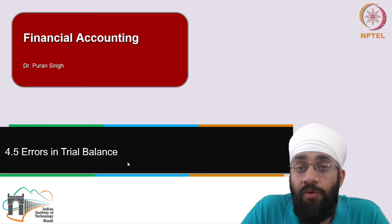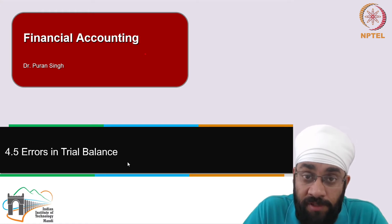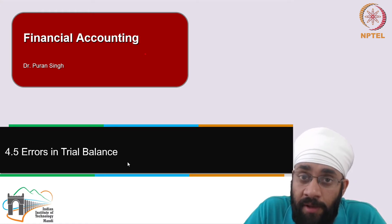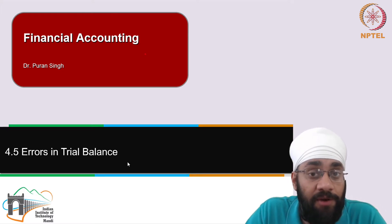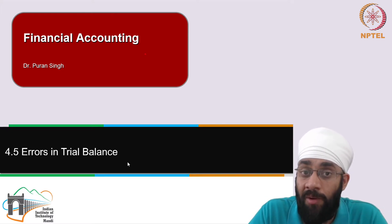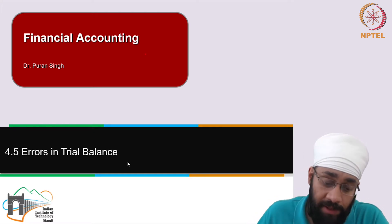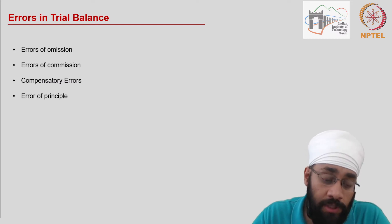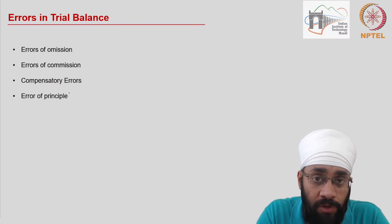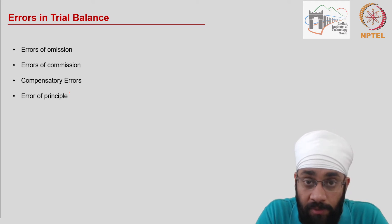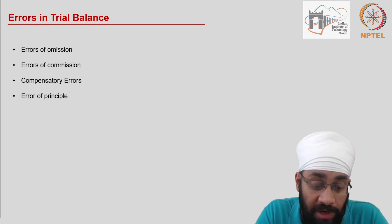In this video we are going to talk about possible errors in the trial balance which may not be visible, which may not be detected. The total of the trial balance — debit side and credit side — may be equal, but there may still be some issues which may not be detected by just the total of the trial balance. Here are four types of errors which may not be figured out through the trial balance.